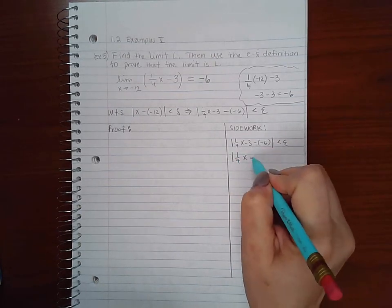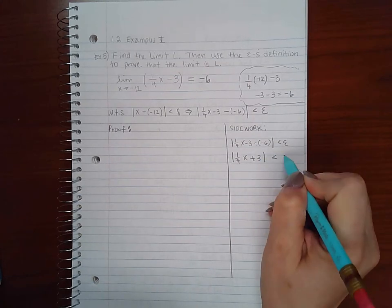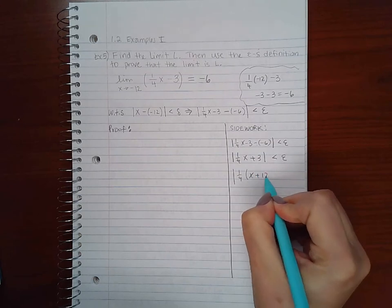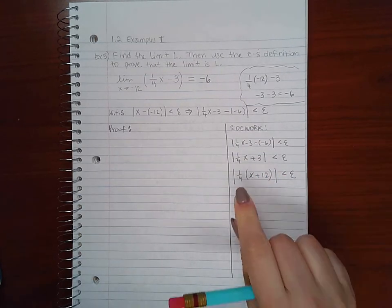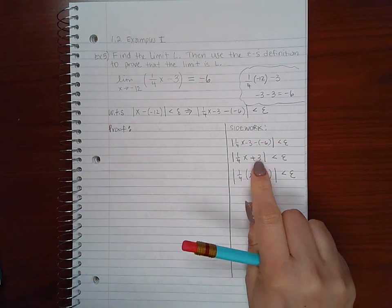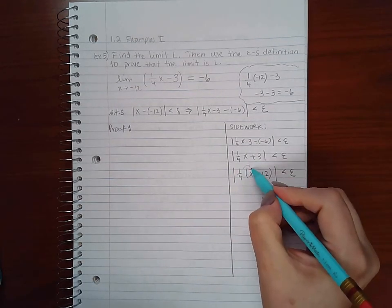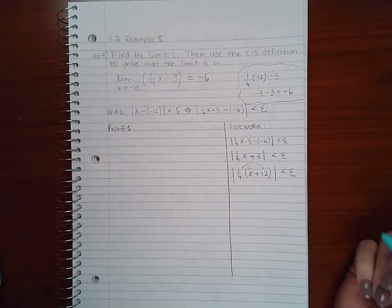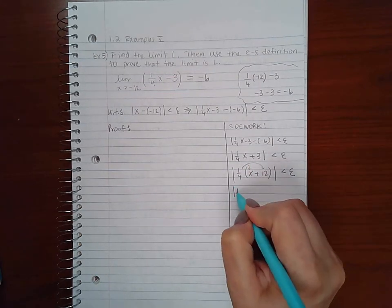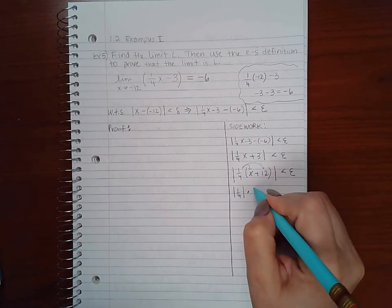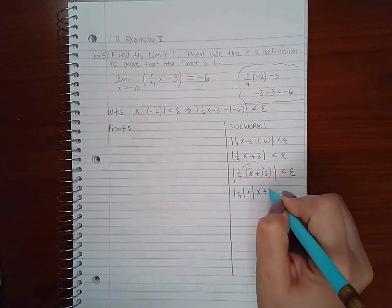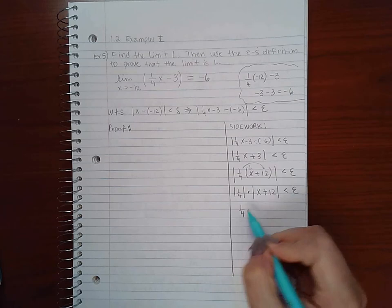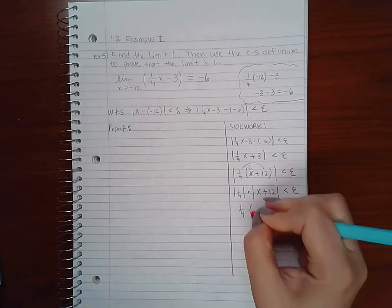This would be positive 3. If I factor out a 1/4th, I would get x plus 12. If you're not sure, distribute this and make sure you get these two terms. So 1/4 times x is 1/4 x, and 1/4 times 12 is 3. Then I'm going to separate the absolute value of each factor, and then I'm going to take the absolute value of 1/4, which is just 1/4.